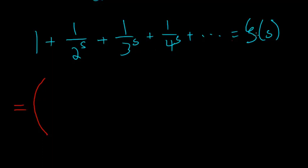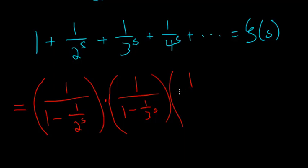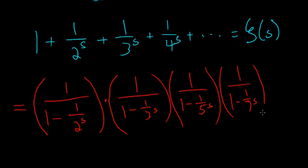So you have this, he finds this whole sum is equal to 1 divided by 1 minus 1 over 2 to the s, and multiplied because it's an infinite product. 1 divided by 1 minus 1 over 3 to the s, multiplied by 1 divided by 1 minus 1 over 5 to the s, times by 1 over 1 minus 1 over 7 to the s. And I think you are starting to see the pattern. Next is 1 divided by 1 minus 1 over 11 to the s.